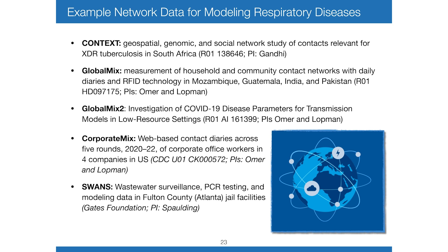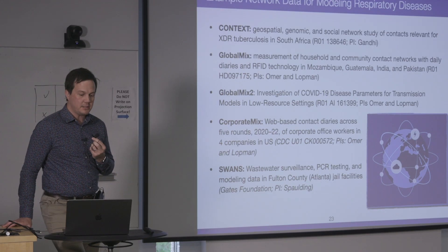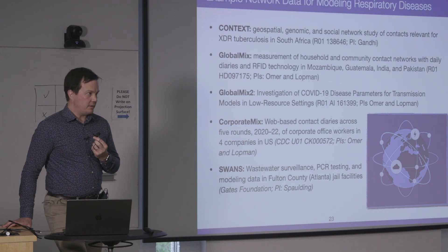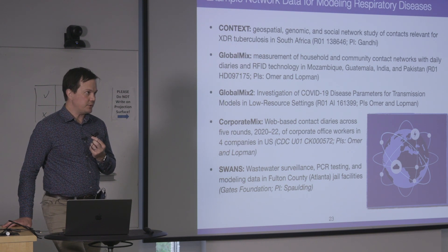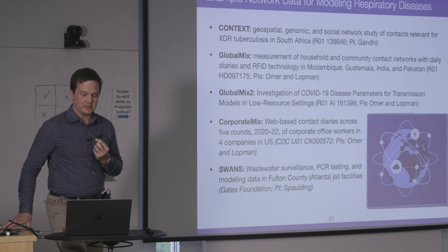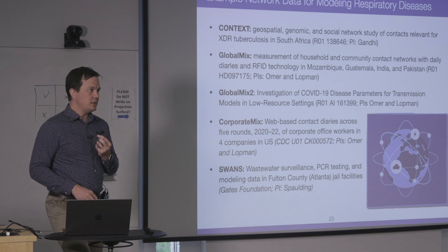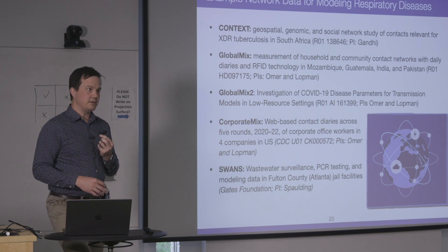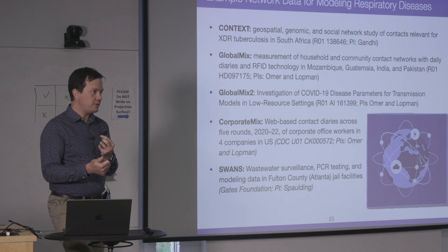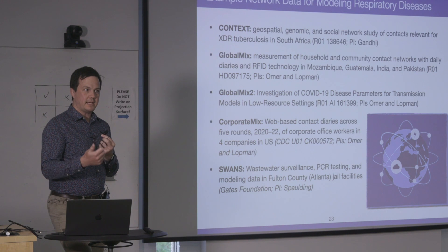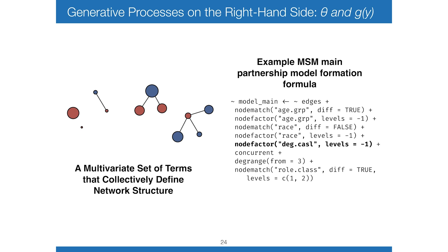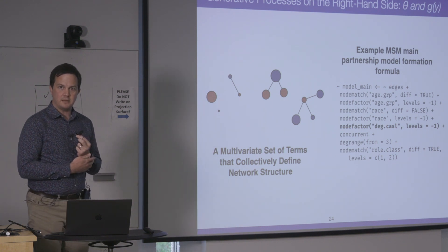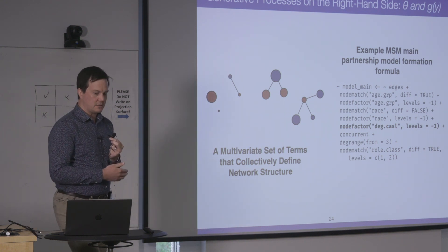We also do this for respiratory diseases — TB, COVID, and correctional health settings such as jails and prisons for transmission of respiratory diseases. All these studies use data diaries or contact diaries to collect recent contacts people have had over a certain period of time, and aspects of those contacts relevant for disease transmission. On the left is the data, on the right is a model for the process — which can be very flexible related to the question of interest.